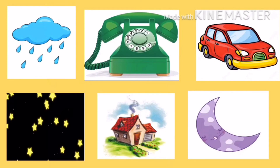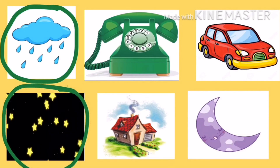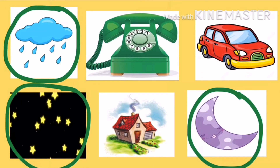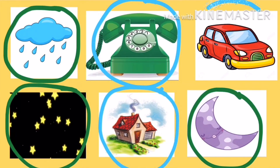Let us see a few more images and circle all the natural things with green colour. So the clouds and the rain, the stars and the moon are natural things — we have circled them with green colour. Whereas the telephone, the house and the car are man-made things, so we have circled them using blue colour.